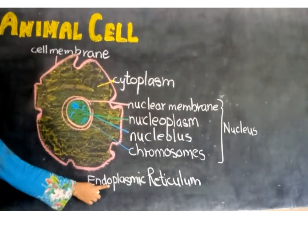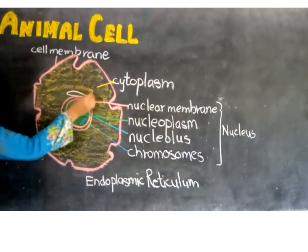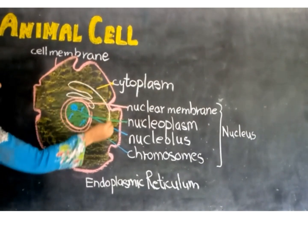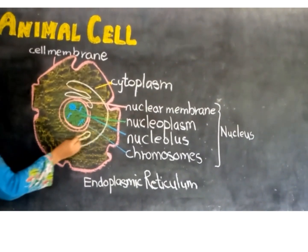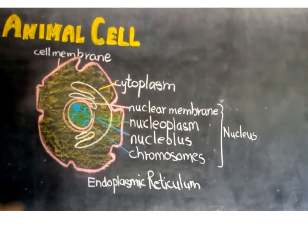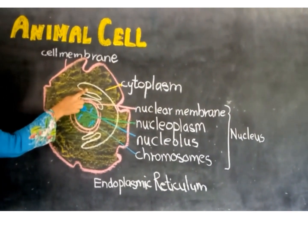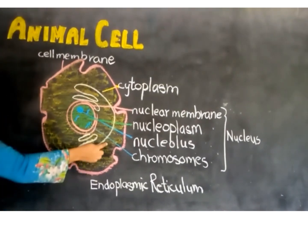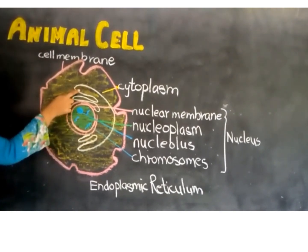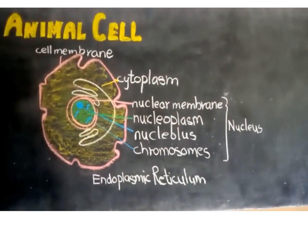The endoplasmic reticulum is an organelle connected with the plasma membrane and the nuclear membrane. The function of the endoplasmic reticulum is to transport substances within the cell. It also gives mechanical shape and support to the cell.